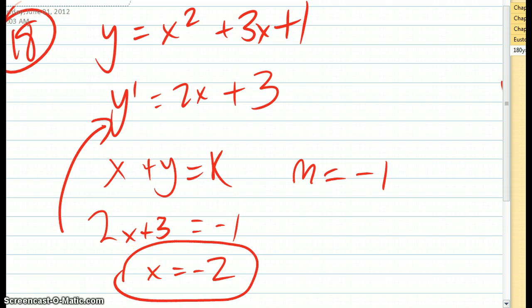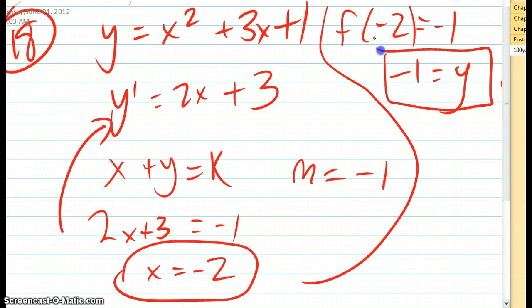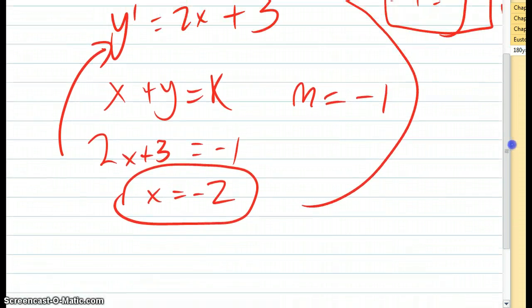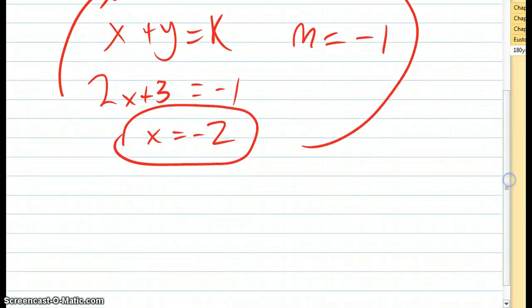So to find y, we plug back in negative 2. So f of negative 2 equals negative 1, which equals y. So when we plug in all the answers that we have, we get negative 2 plus negative 1, which equals negative 3. So the answer is a.